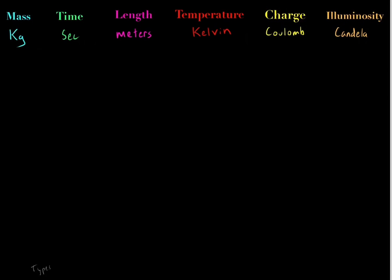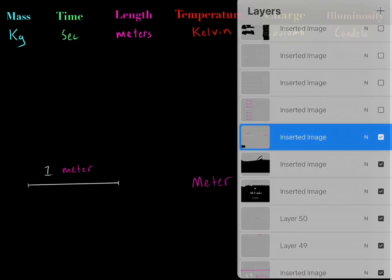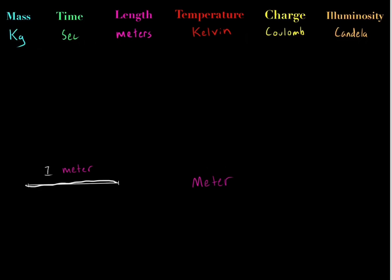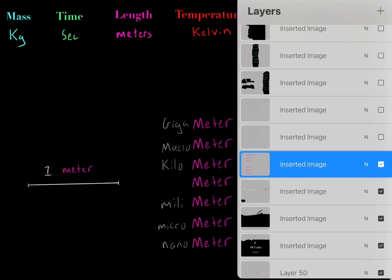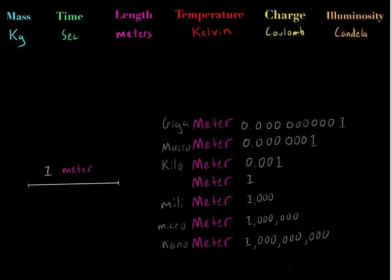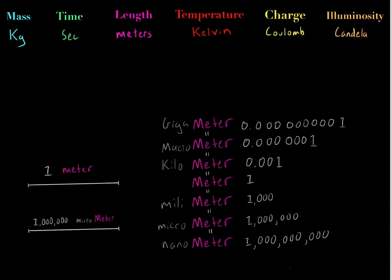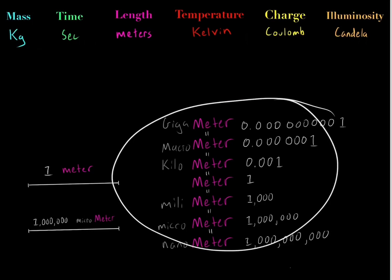However, there are different types of these variables. For example, there are different types of meters. One meter is the exact same length as 1,000 millimeters, which is the same as a million micrometers, and so on. So if we had a million micrometers, it would be the exact same length as one meter, because all these represent physically the same thing.